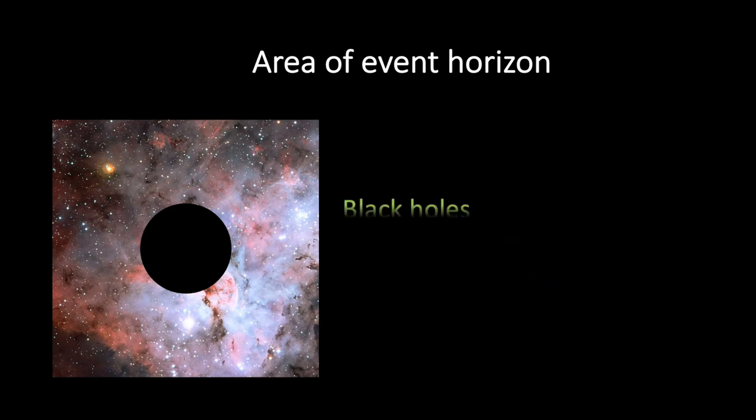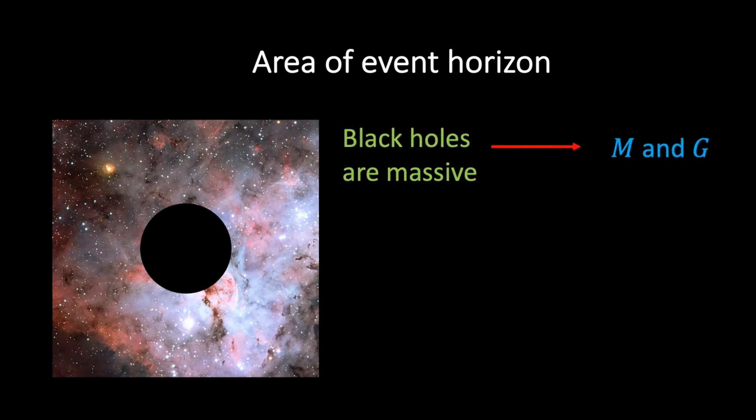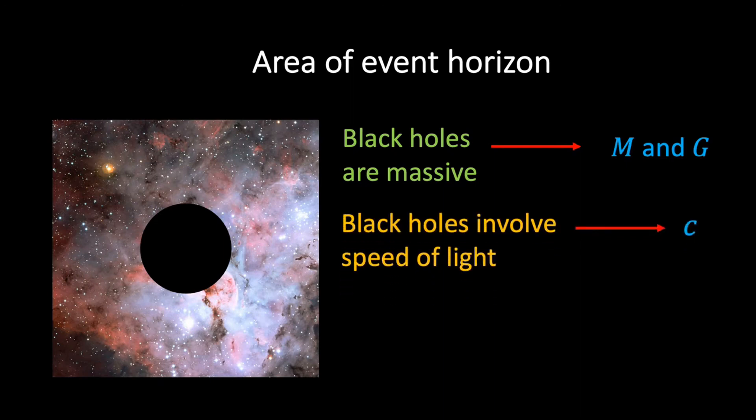Well, firstly, black holes are clearly massive objects, and so our equation should include Newton's gravitational constant G along with the characteristic mass of the black hole M. Furthermore, we know that a black hole is a region of spacetime where gravity is so strong that nothing, not even light, can escape. And so we should expect the speed of light to feature in our equation.